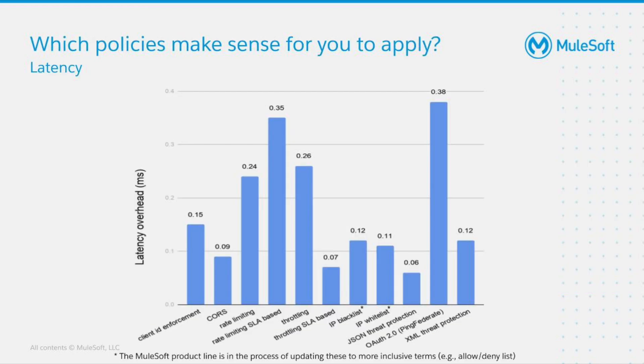Now that we've seen what kind of policies are available, you might ask yourself which policies make sense for you to apply. Looking at this diagram, we can see that every policy adds some latency onto our request — some policies add more latency and some less. The critical point is you shouldn't apply all available policies to your APIs as this will increase latency. Instead, treat it like a toolbox from where you can pick and choose those policies that make sense for your use case.